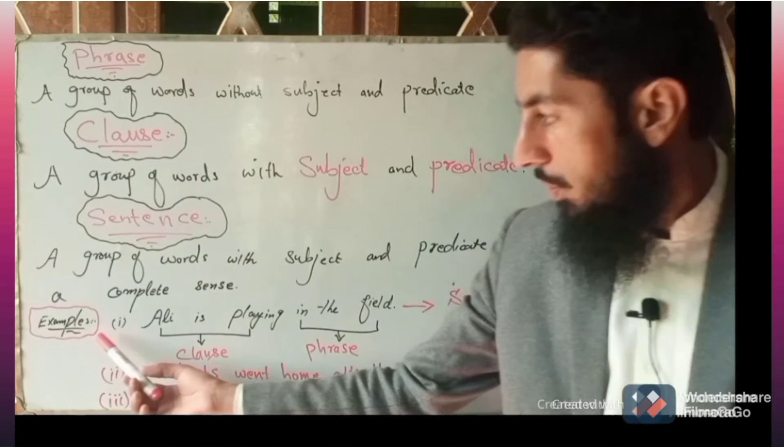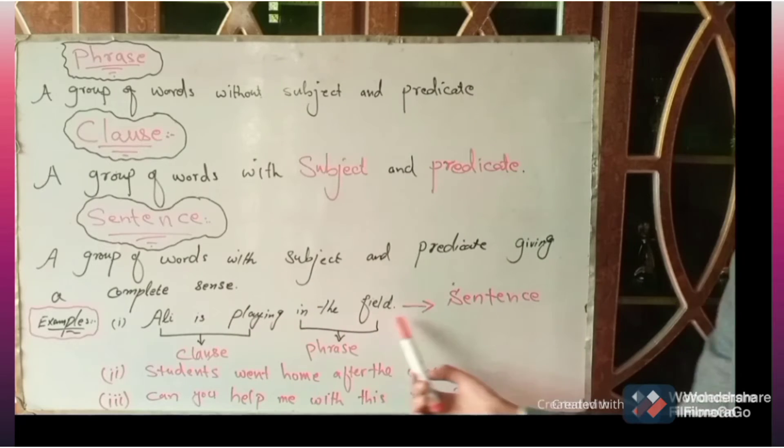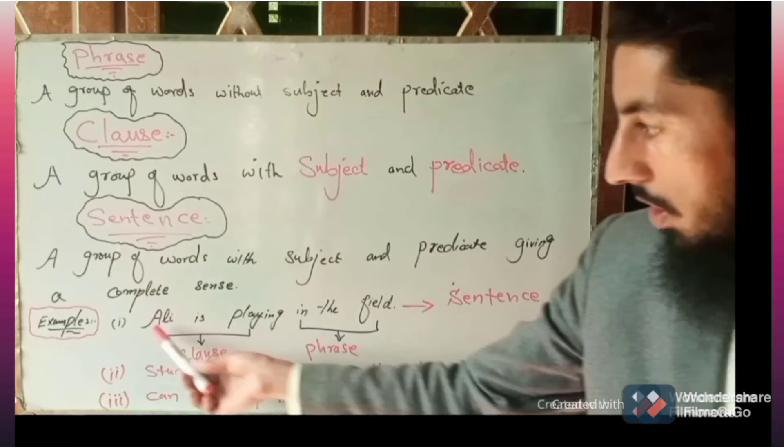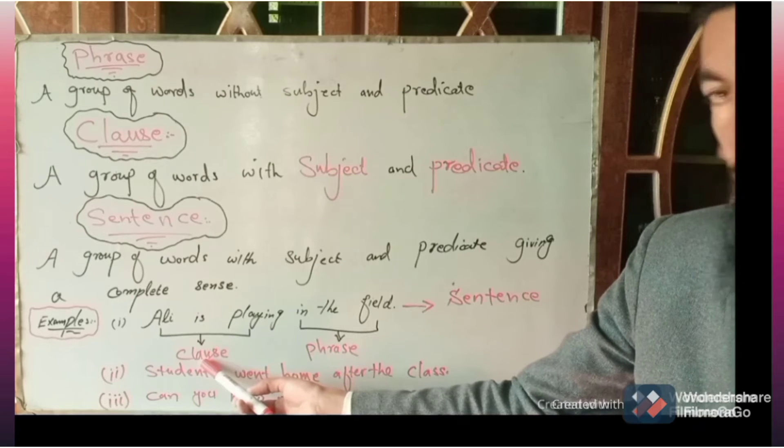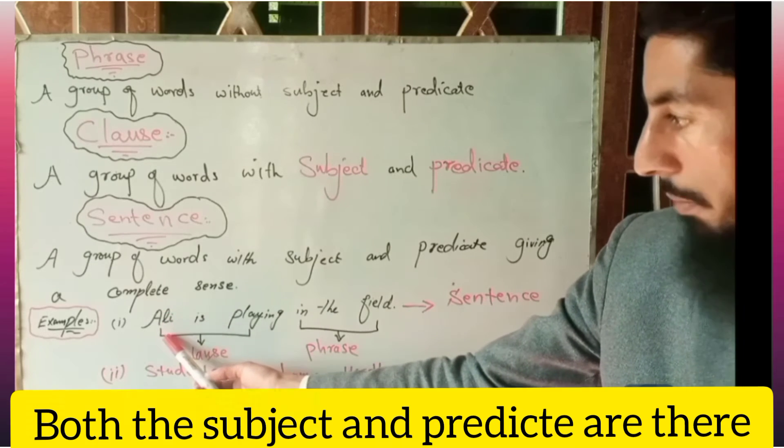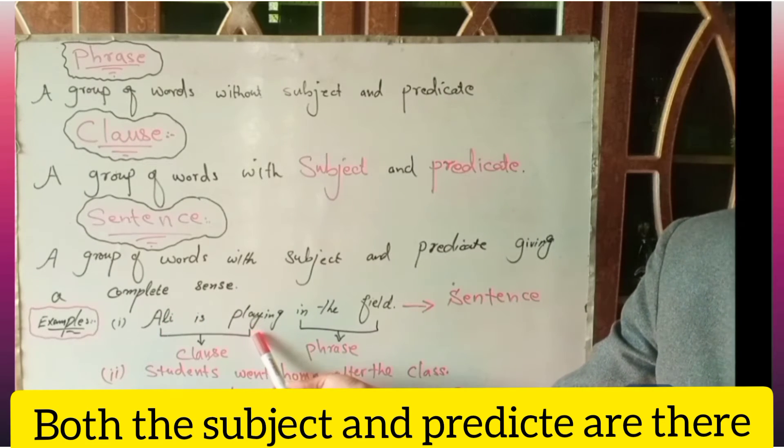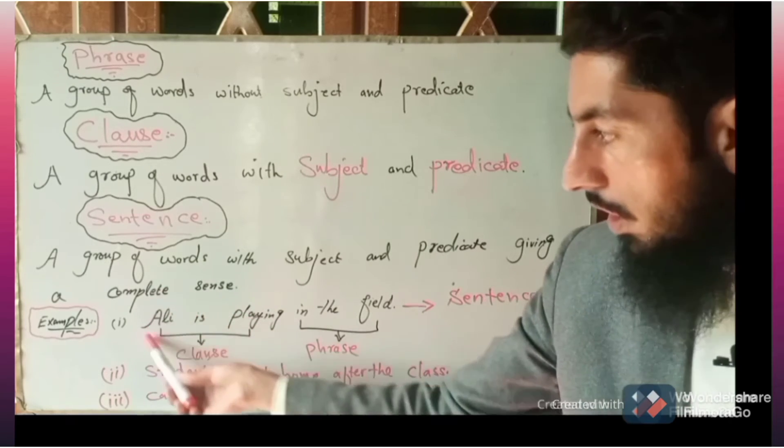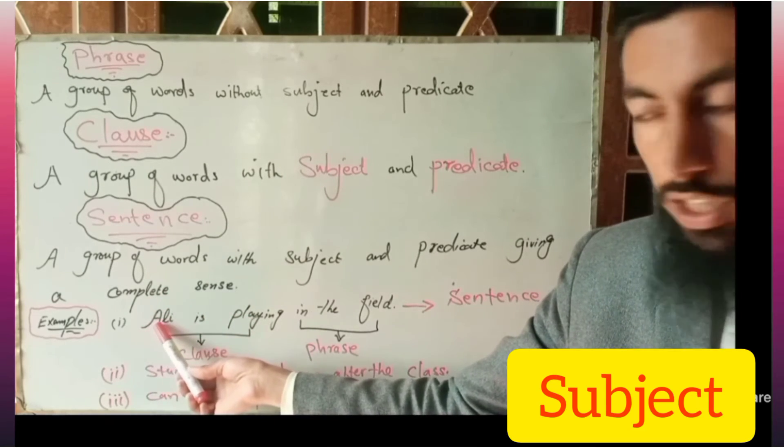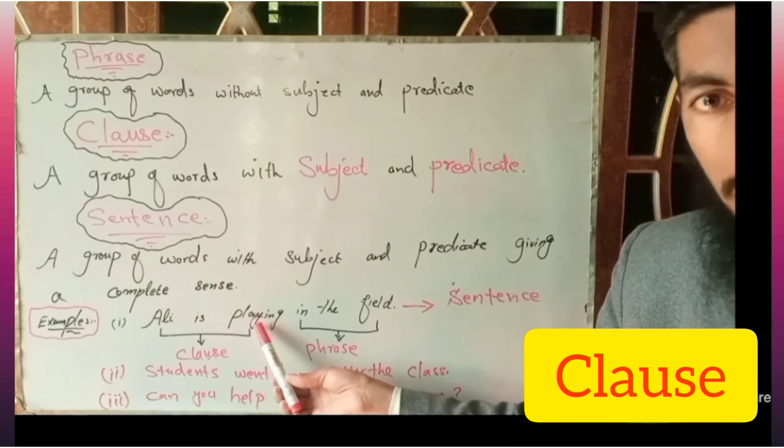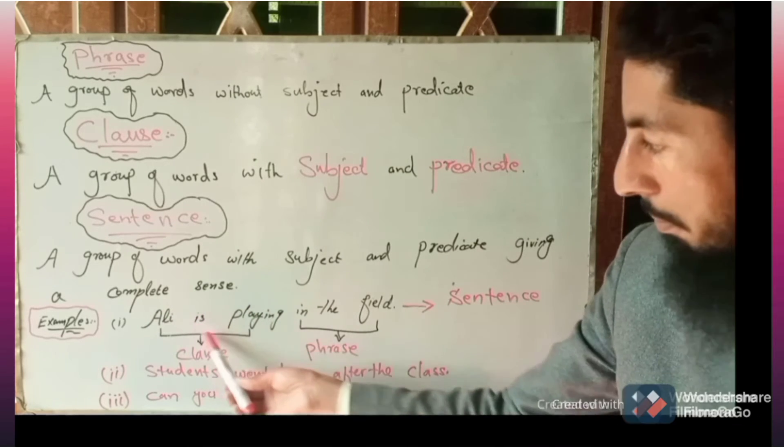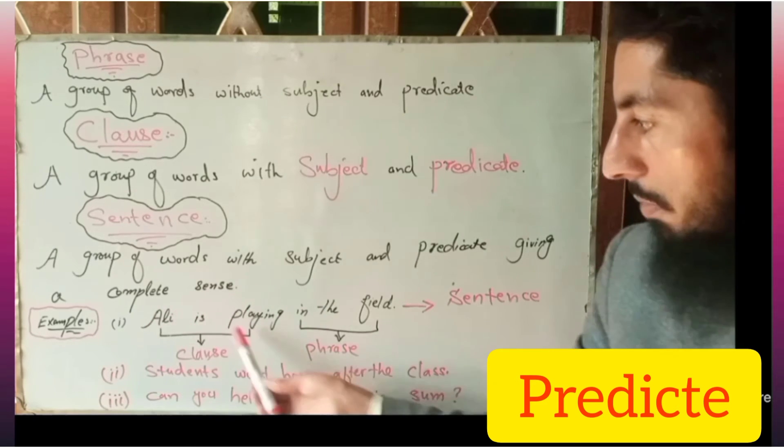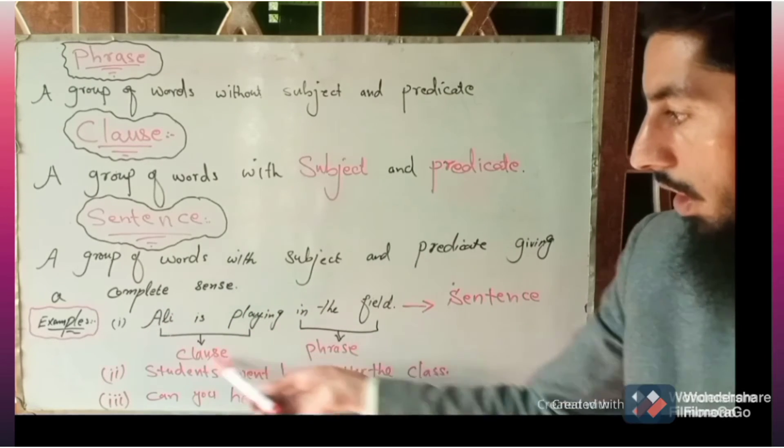Here is an example for you. For example, Ali is playing in the field. Ali is playing, this part of the sentence, this is called clause. In this, see, both subject and predicate are there. Ali is playing. Ali is the subject. We are talking about Ali. Ali is playing, this is Ali's action, this is predicate. This is subject, this is predicate, and this is whole clause.